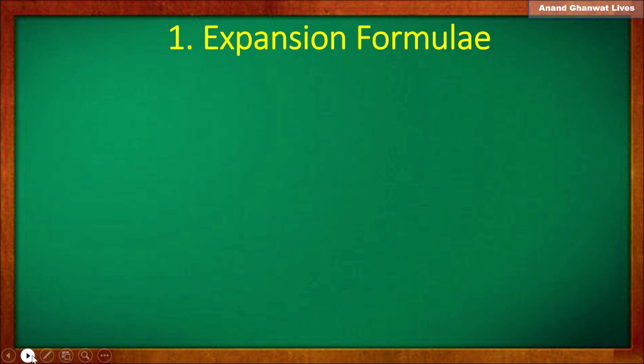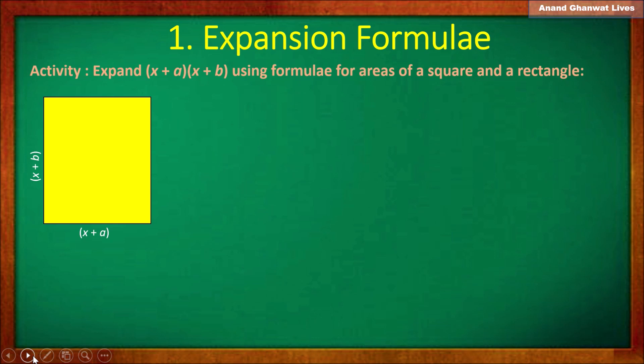Now let us do an activity. Take that rectangle again with sides (x + a) and (x + b). Cut that rectangle such that the length (x + a) is divided into x and a separately, and the breadth (x + b) is divided into x and b separately. So one part is x and another part is a, and one part is x and another part is b.